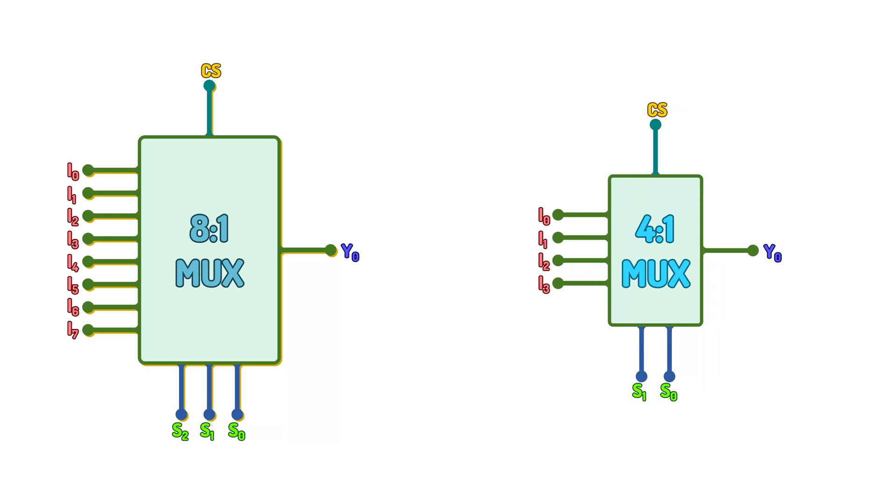Remember from our previous discussion that the 8-to-1 multiplexer will require three select lines, whereas the 4-to-1 multiplexer will require two select lines. We have to control eight input lines, but a 4-to-1 multiplexer can only help us with four inputs.